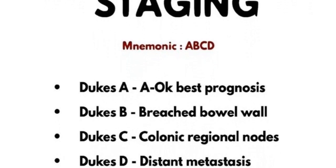The last one is Duke D stage, and D is for distant metastases. This can metastasise into the bones, liver, lungs, or brain.